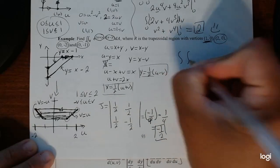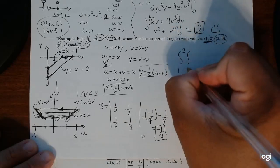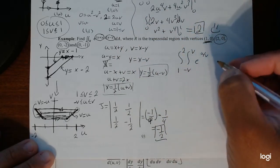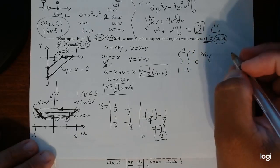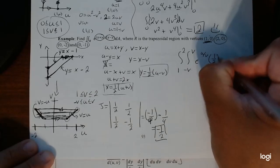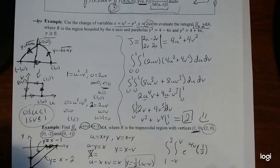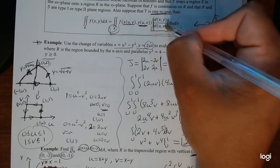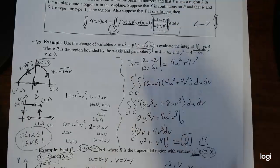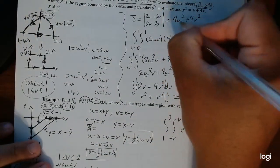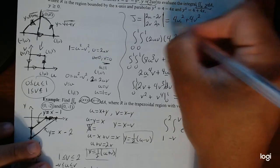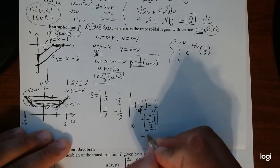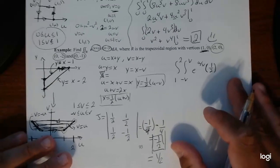Computing the Jacobian: dx/du equals 1/2, dx/dv equals 1/2, dy/du equals 1/2, dy/dv equals negative 1/2. The Jacobian determinant is (1/2)(negative 1/2) minus (1/2)(1/2) equals negative 1/4 minus 1/4 equals negative 1/2. Since the Jacobian must be positive, we take the absolute value, giving us positive 1/2.